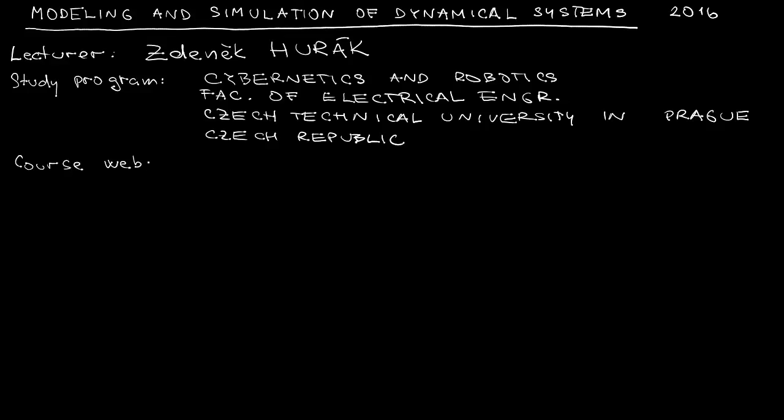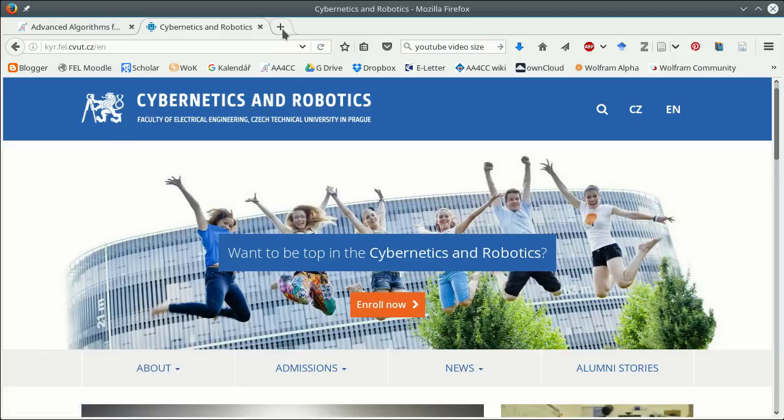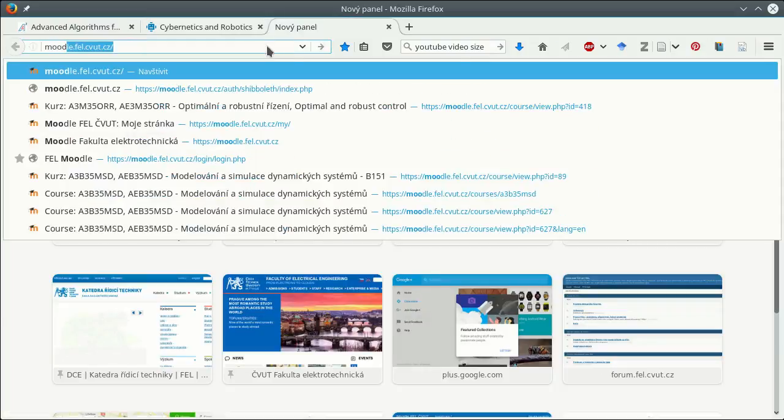The most important website, however, is the website for the actual course. It's so important that I will put its address here explicitly. It's located on the official Moodle web page run by the Faculty of Electrical Engineering, and the most important component of the address is the official code for the course.